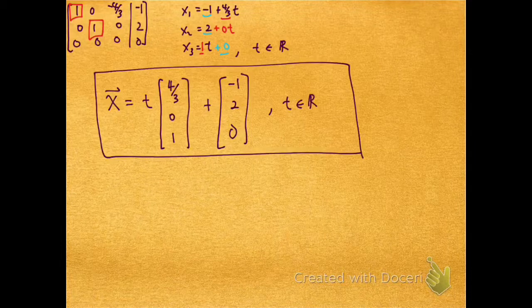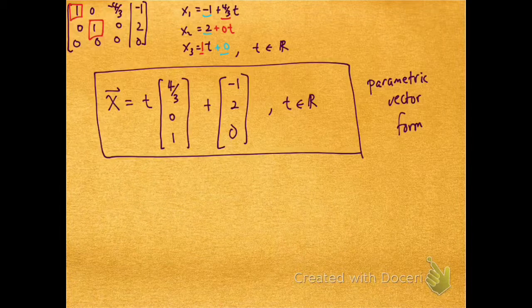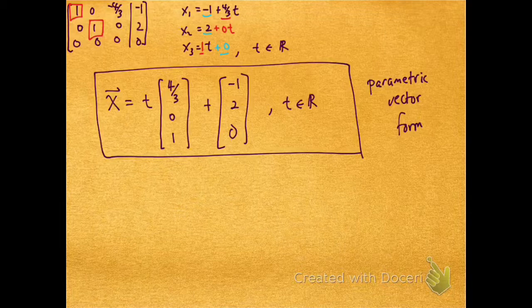And so in parametric vector form, the solution is x is equal to t times (4/3, 0, 1) plus (-1, 2, 0).